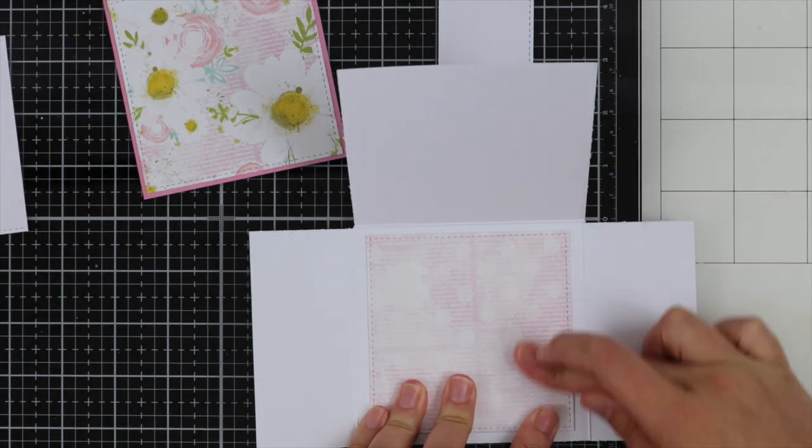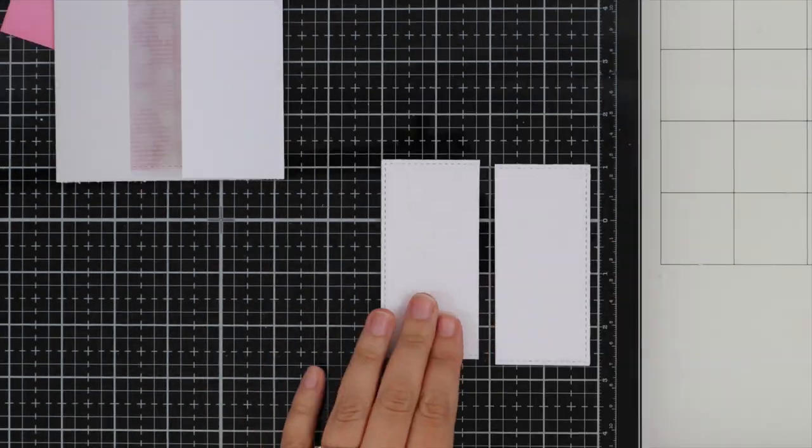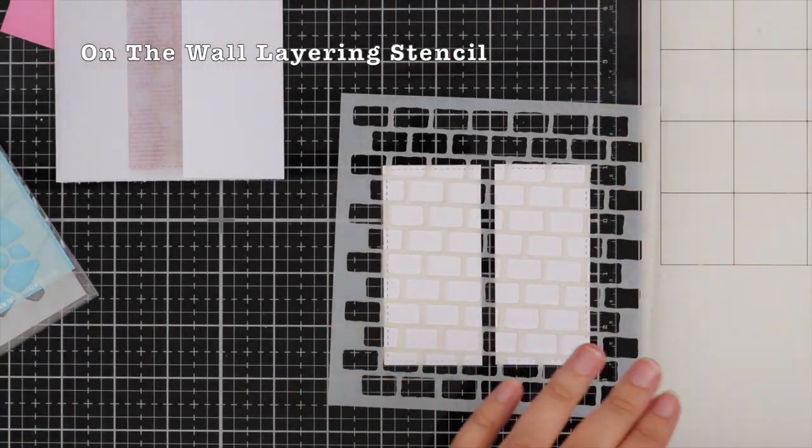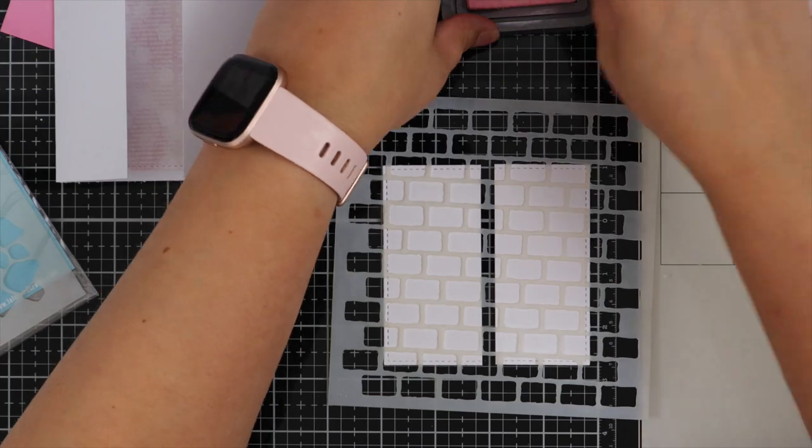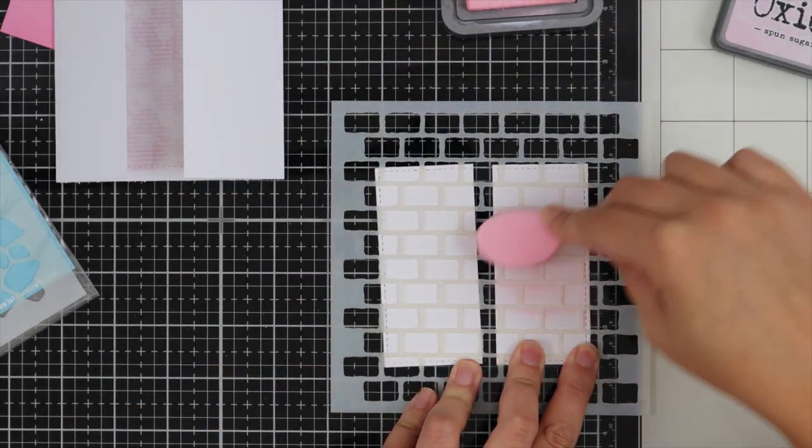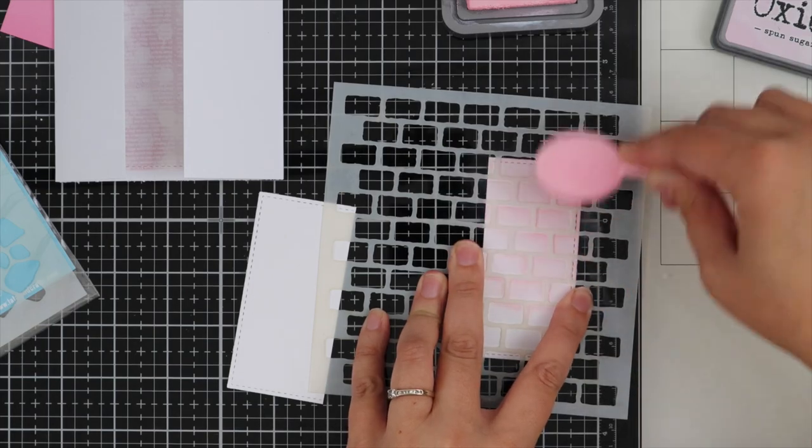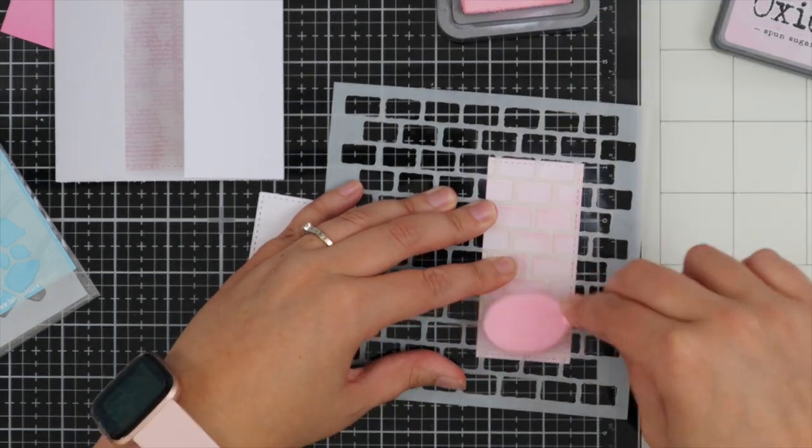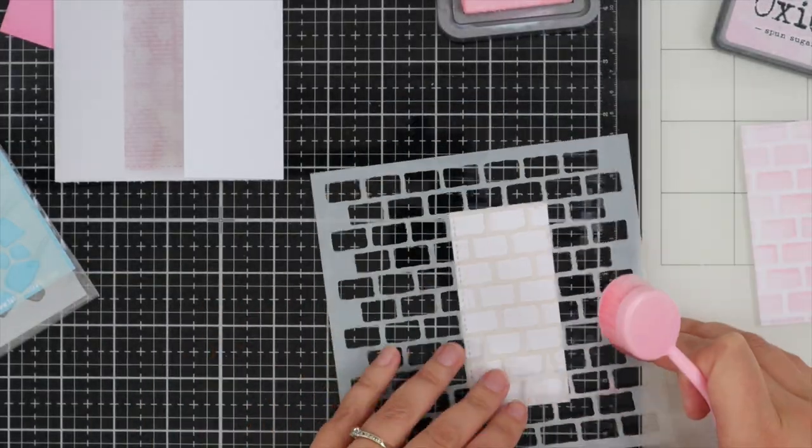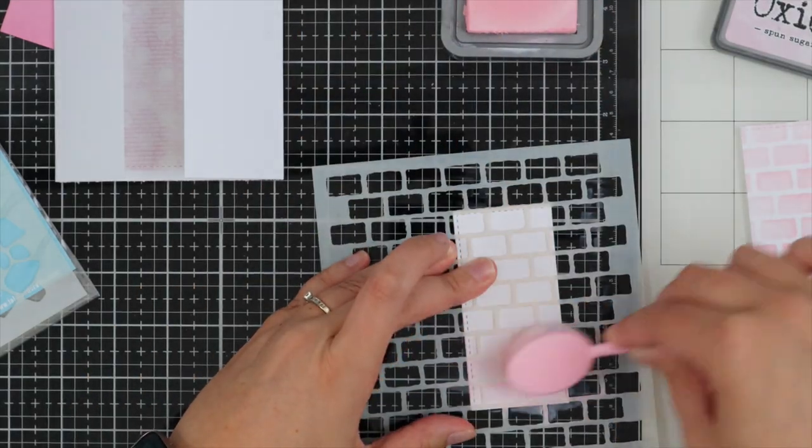I'm adhering the piece that's inside the card where you'll be writing your greeting using liquid adhesive. Now I have the On the Wall layering stencil and some distress oxide ink in spun sugar, adding this onto the little pieces for the hidden part.